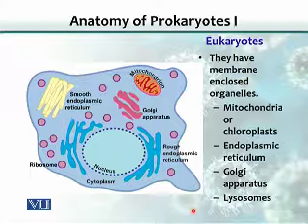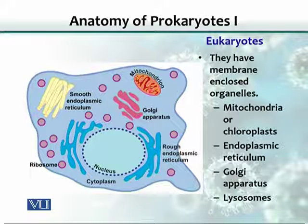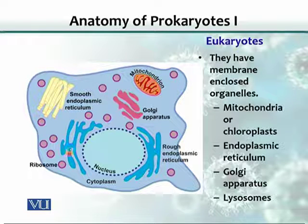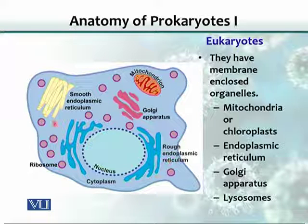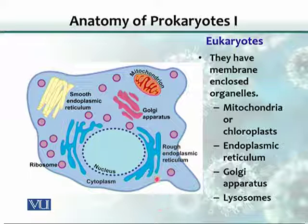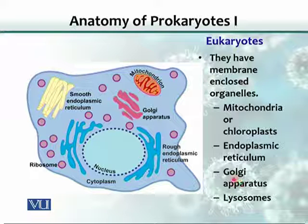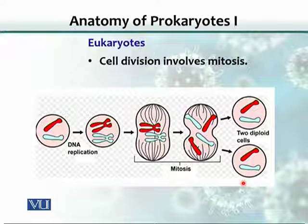Eukaryotes also have organelles — basically small organs. Examples of these organelles include mitochondria, endoplasmic reticulum, of which there are two kinds: rough endoplasmic reticulum and smooth endoplasmic reticulum. There is also the lysosome and the Golgi apparatus. Eukaryotes divide by a special process called mitosis, whereas in prokaryotes the cell division was simple binary fission.